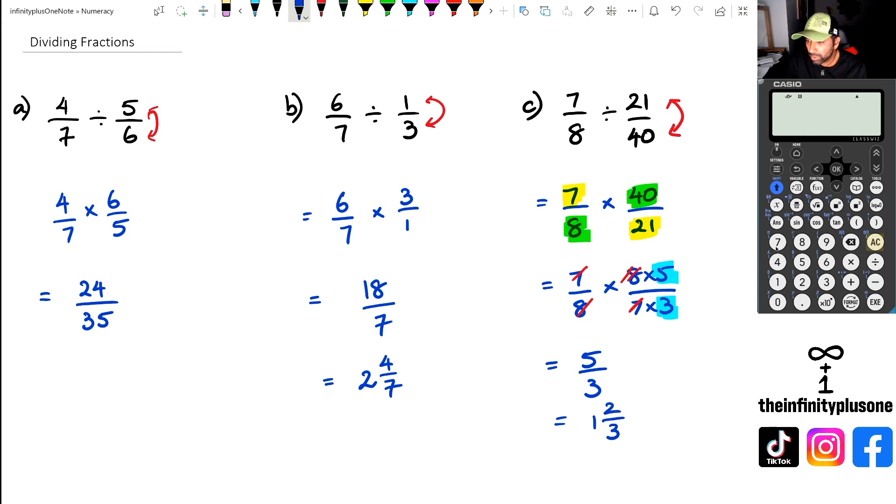Let's have a look at the calculator just to see what the calculator does to give us the answer. So we've got seven eighths, and we're going to go divided by 21 over 40. And as you can see, that's actually giving us an answer of five thirds.